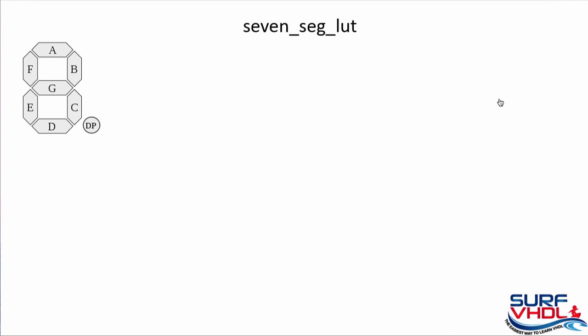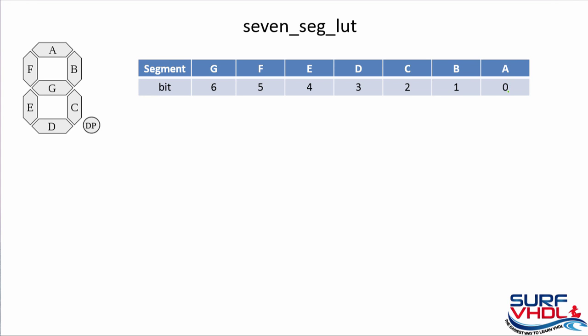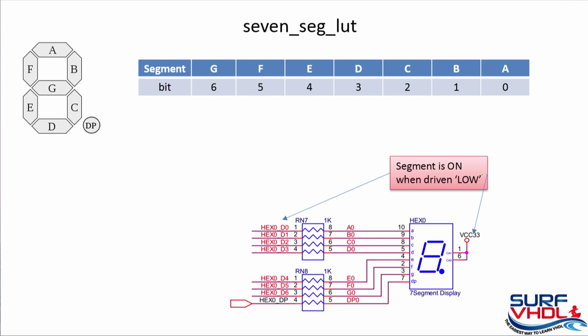In this slide we will see how to drive a seven segment LED. This is the representation of the LED: we connect bit zero of our bus to segment A, bit one to segment B, and so on up to bit six connected to segment G. As mentioned before, if we want to drive a segment on, we have to drive the input of the seven segment display low, because this point is connected to VCC — when this point is low the LED is on.